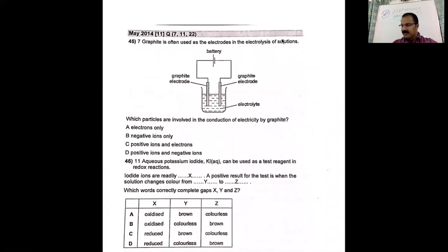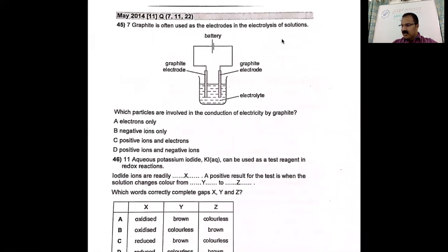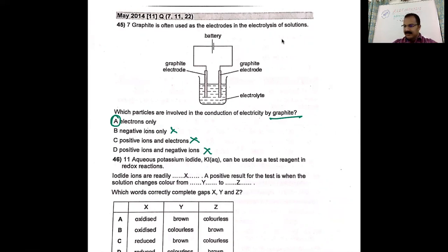Graphite is often used as an electrode. Which particles are involved in the conduction of electricity by graphite? Graphite is just like metals — only electrons are involved. Negative ions are only in the electrolyte. Positive ions and electrons together characterize metals. Positive and negative ions characterize electrolytes. Since graphite conducts like a metal, the answer is electrons only.